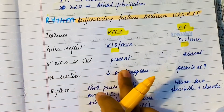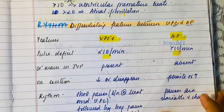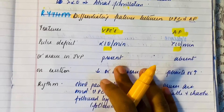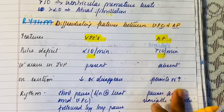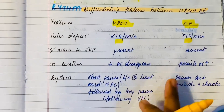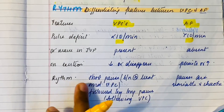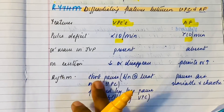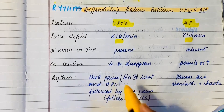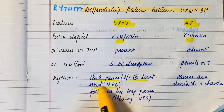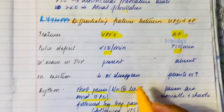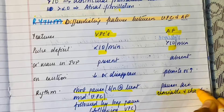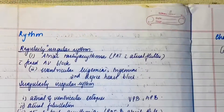The 'a' wave in the JVP will be present in case of VPCs whereas it will be absent in atrial fibrillation. On exertion, VPCs can decrease or disappear, but atrial fibrillation will persist or increase. In terms of rhythm, there will be a short pause between a normal beat and a PVC followed by a long pause after the PVC, whereas in atrial fibrillation the pauses are variable and chaotic.